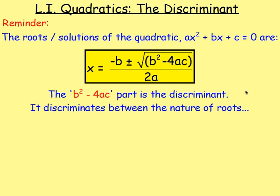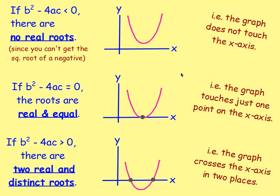We then looked at the discriminant — b squared minus 4ac from the quadratic formula. Its purpose is to determine the nature of the roots of a quadratic. If b² - 4ac is less than zero, there are no real roots. If b² - 4ac equals zero, the roots are real and equal. If b² - 4ac is greater than zero, there are two real and distinct roots. The graph shows no contact, one contact point, or two contact points respectively.